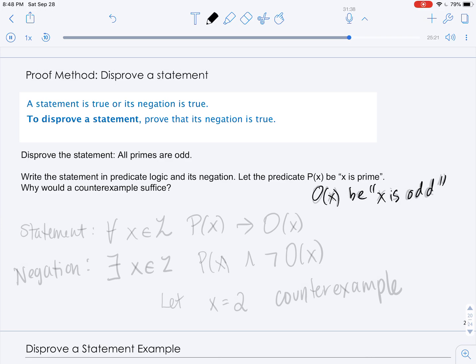Let's first translate the statement into predicate logic. So the original statement is going to be for all x that are integers, if x is prime then x is odd.